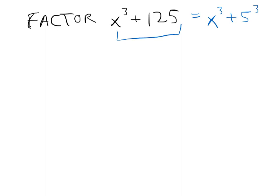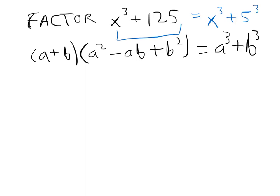Now let's go ahead and factor this. We have a formula that goes like this: (a+b)(a²-ab+b²) always equals a³+b³. So if we're given x³ plus 5³, we should be able to factor it and get back to that. So let's try it.